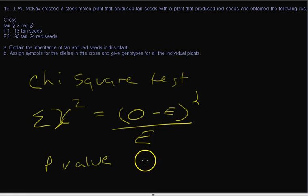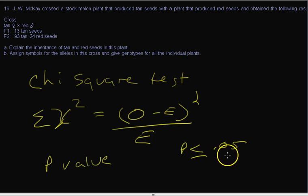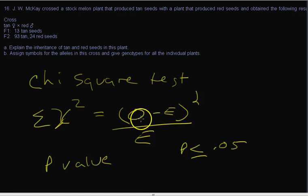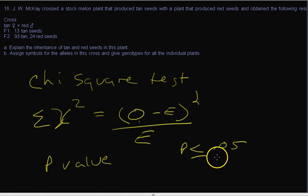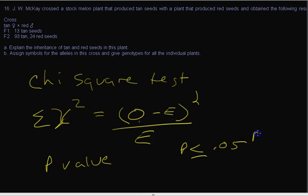If p is less than or equal to 0.05, that means we're looking at the probability that the difference between the observed and the expected is due to chance — and this is a low probability. So if the difference is probably not due to chance, it must be due to something else, and we have to reject the hypothesis.